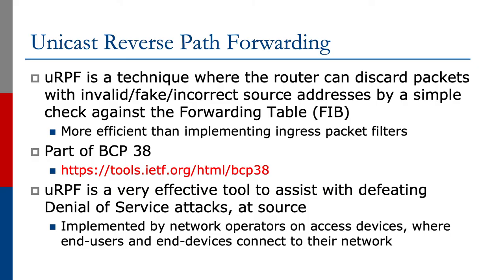This short presentation will show you how Unicast Reverse Path Forwarding works. URPF is a technique where the router can discard packets with invalid, fake, or incorrect source addresses by a simple check against the forwarding table or the FIB. This is much more efficient than implementing ingress packet filters on the router itself.